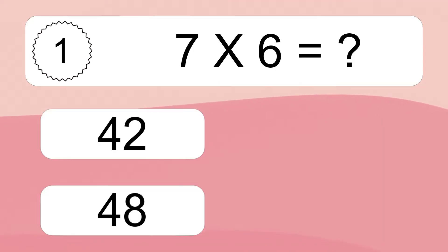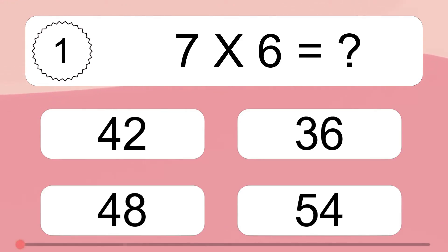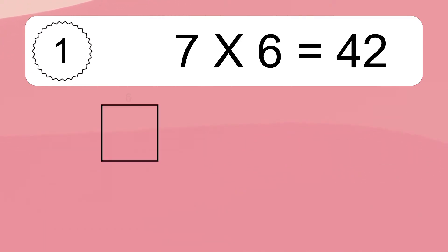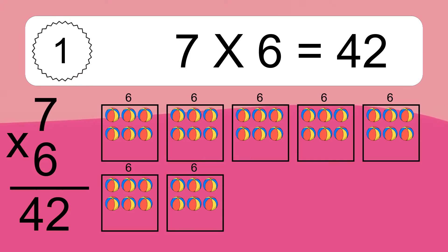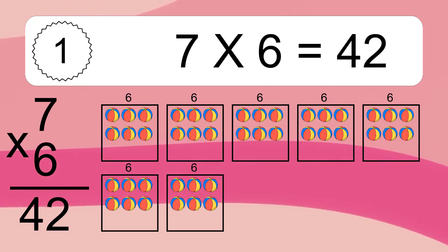7 times 6 equals what? 7 times 6 equals 42. We have 7 boxes, and each box has 6 colorful balls inside. If you count all the balls in all the boxes together, you will have 7 times 6 balls. This equals 42 balls.